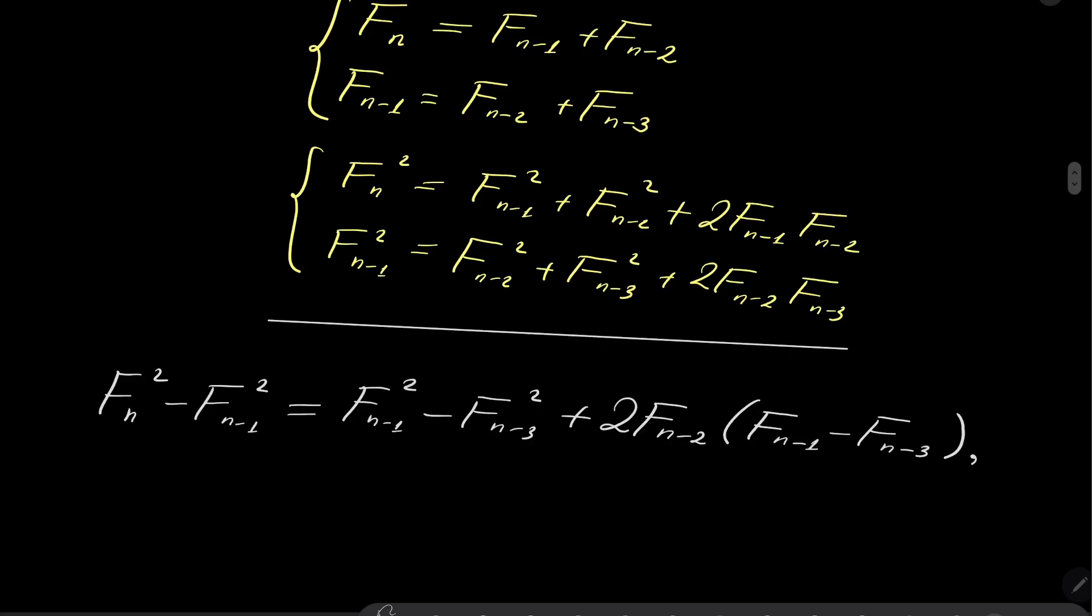All right. Now, what can we do? I will take this term and I will put it on the left-hand side, and I will put this term on the right-hand side. And notice one more thing. What is that? Well, F_{n-1} can be written as F_{n-2} + F_{n-3}. So we are left with F_{n-2}.